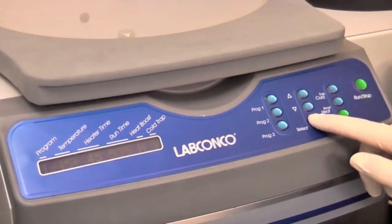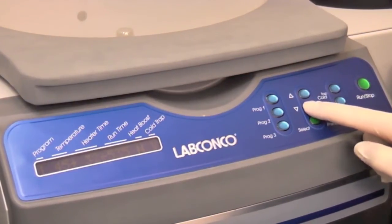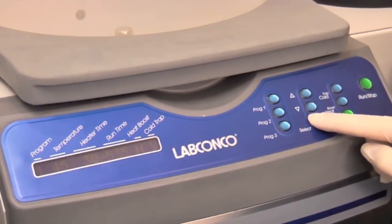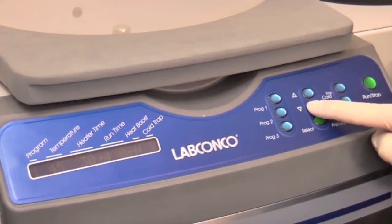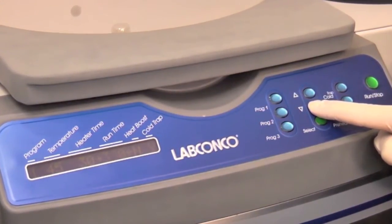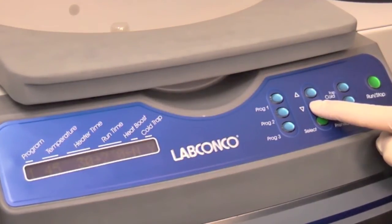When select is pressed again, the arrows move to heater time. For heat sensitive samples, the heater can be turned off before evaporative cooling is complete. Set the heater time for 30 minutes. Set the run time for 60 minutes.